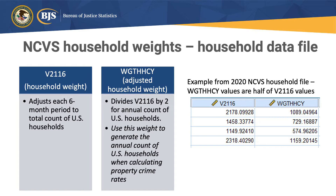The first household weight on the file is V2116, and this adjusts each six-month period to a total count of U.S. households. However, in order to avoid doubling the household population, we divide V2116 by two to get an annual count of U.S. households. We use this weight — weight HHCY, meaning weight, household, collection year — to generate an annual count of U.S. households when calculating property crime rates. For example, from the 2020 NCVS household file, the first row shows V2116 with a weight value of 2178, which we divide in half to get 1089 for weight HHCY.